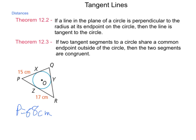So using Theorem 12.3 here, we know that PX is 15 centimeters. That means that PZ will also be the same 15 centimeters. In a similar idea, if RZ is 17, using Theorem 12.3, RY will also be 17 centimeters.